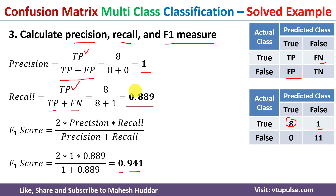In this video I have discussed, given the true class as well as the predicted class, how to construct the confusion matrix and how to calculate accuracy, misclassification rate, harmonic mean, precision, recall, and F1 measure. I hope the concept of confusion matrix is clear. If you like the video, do like and share with your friends. Press the subscribe button for more videos and the bell icon for regular updates. Thank you for watching.